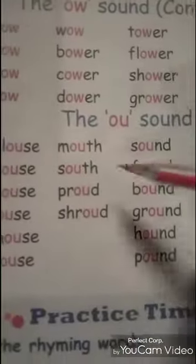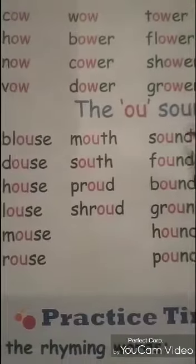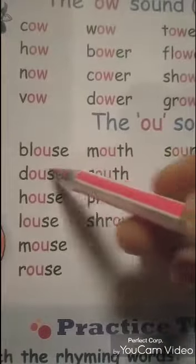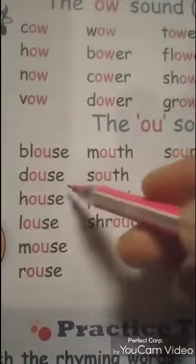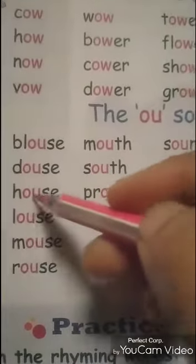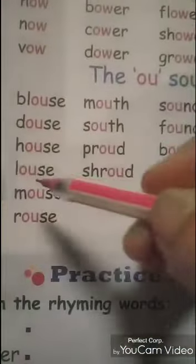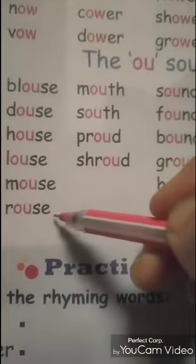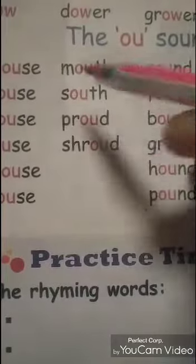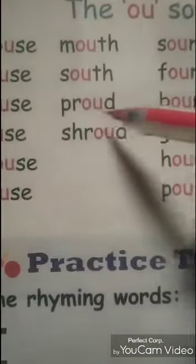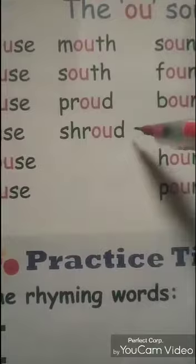Then we can see the O-U sound. It sounds like 'ow'. B-L-O-U-S-E, Blouse. D-O-U-S-E, Douse. H-O-U-S-E, House. L-O-U-S-E, Louse. M-O-U-S-E, Mouse. R-O-U-S-E, Rouse. M-O-U-T-H, Mouth. S-O-U-T-H, South. P-R-O-U-D, Proud. S-H-R-O-U-D, Shroud.